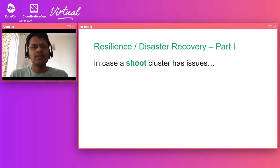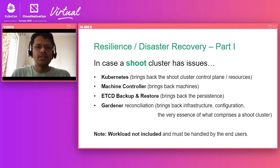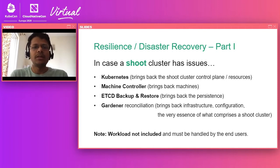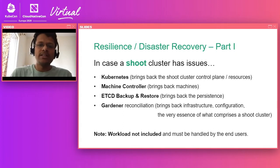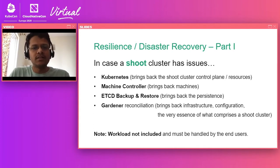Let's see how all of this comes together for resilience and disaster recovery. If a shoot cluster has issues, since all control plane components run in pods managed by Kubernetes, the control plane pods can be brought back up by Kubernetes itself. If the worker machines of the user's cluster are down, Machine Controller Manager can bring up new machines and clear up failed machines from the infrastructure. We rely on etcd backup-restore to provide backup of the cluster's state, so in case of etcd failure we can use the backup stored in the cloud to restore the cluster state, and Gardener itself can reconcile the state of the shoot cluster.